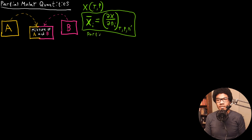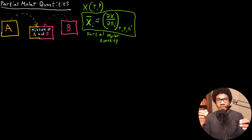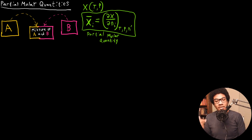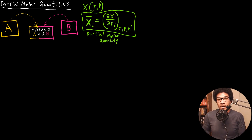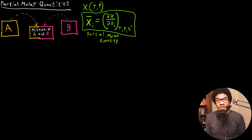So this is a partial molar quantity. Think about what this says to us — this is basically telling us the fractional change of this property with respect to the changing number of moles of a specific species or a specific part of this composition. This will be really useful to us in situations where we have changing composition of our system.